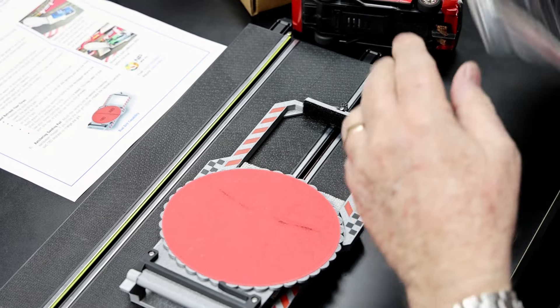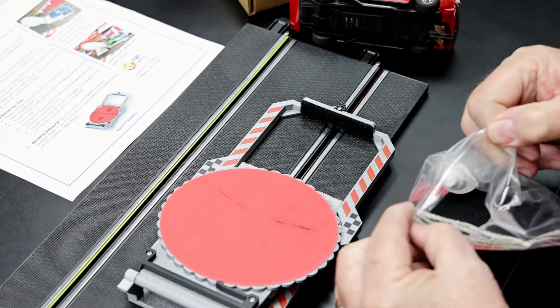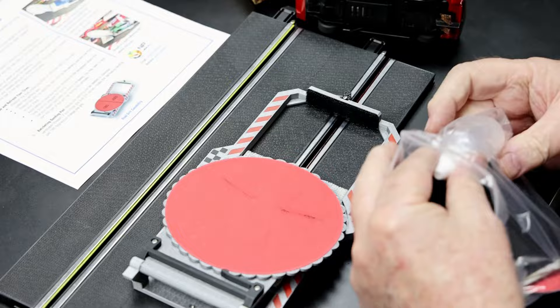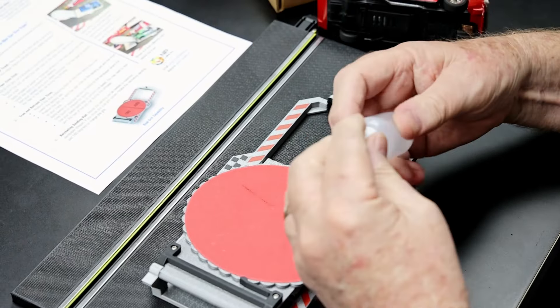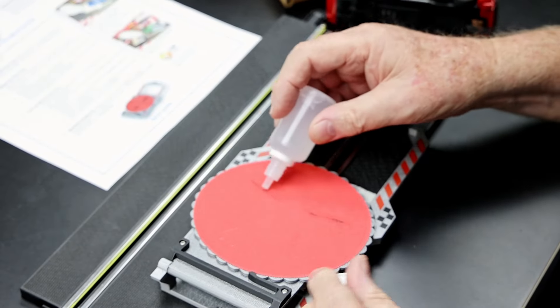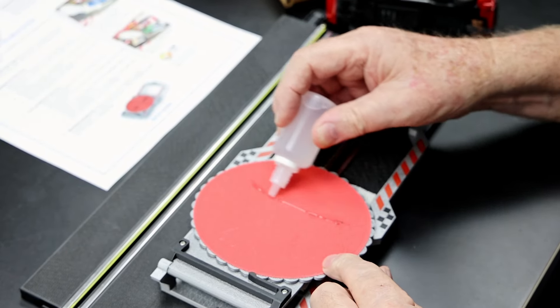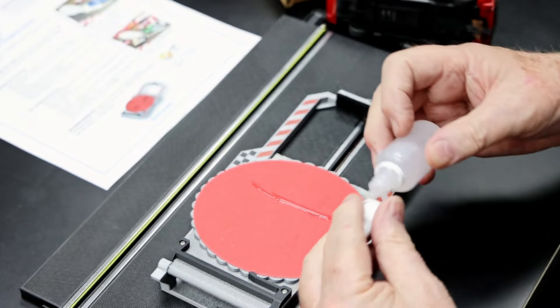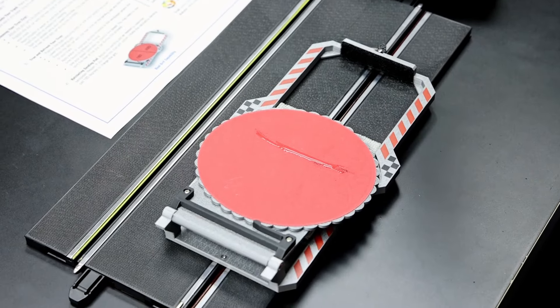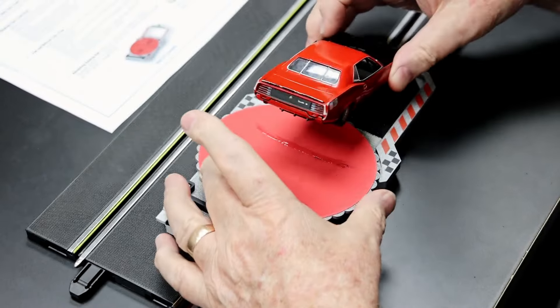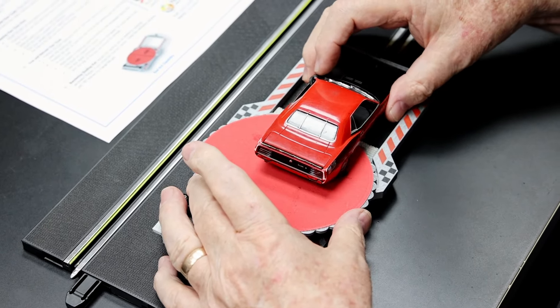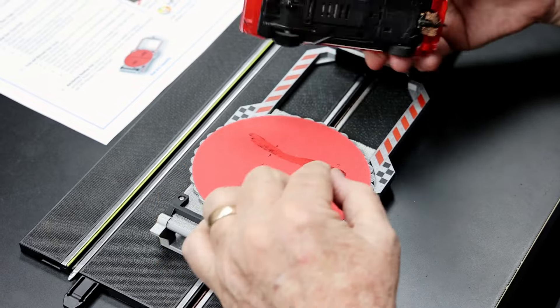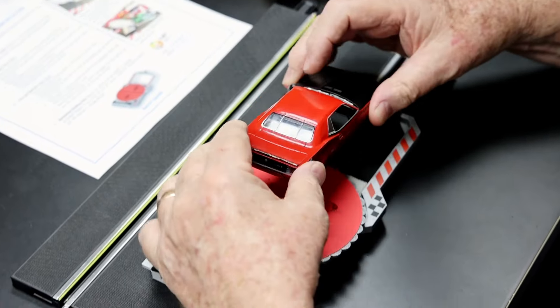What you can of course do, and is recommended in the very nice instructions that come with the truer, is to actually use a little bit of water or a little bit of isopropyl alcohol on the tire truer, on the grinder, so that you get a little bit of lubrication on the tire, and that will help you.